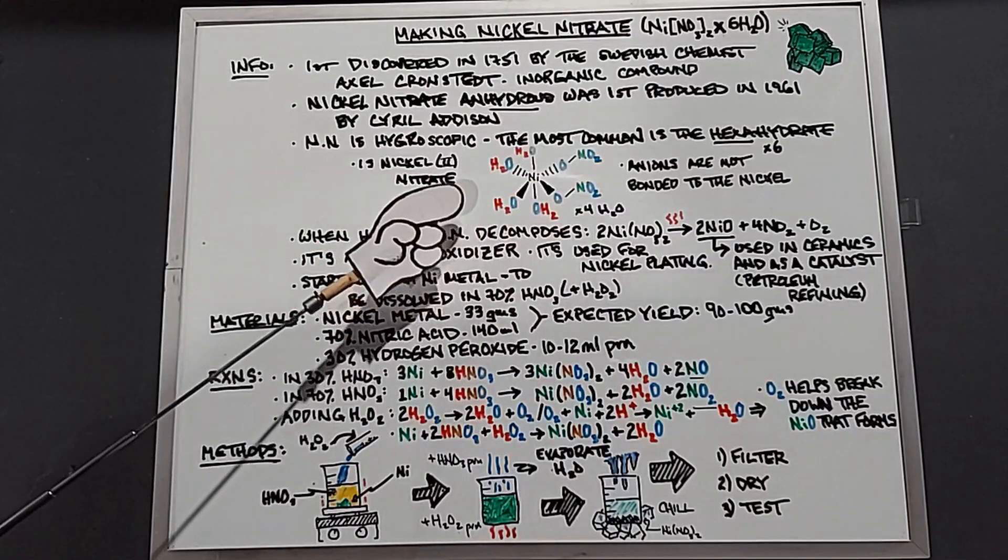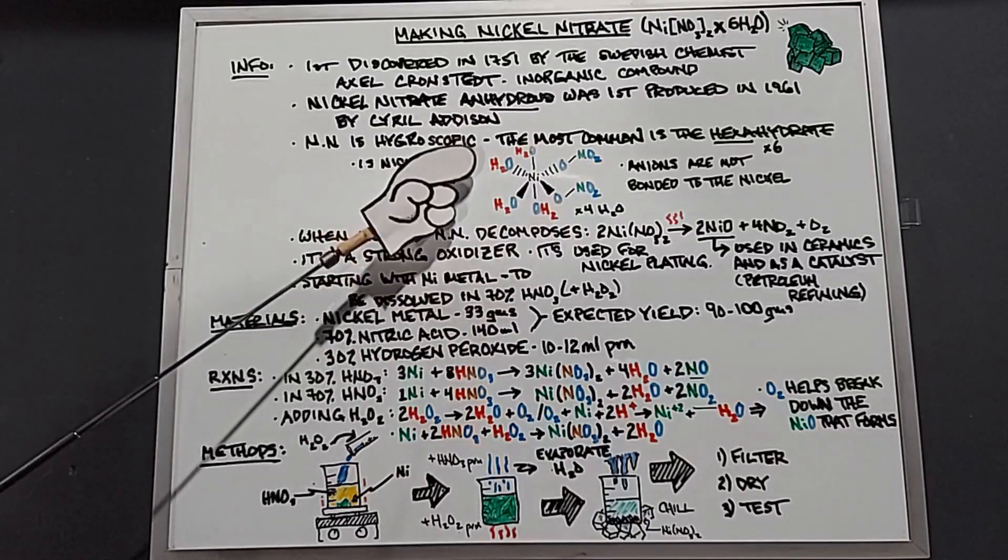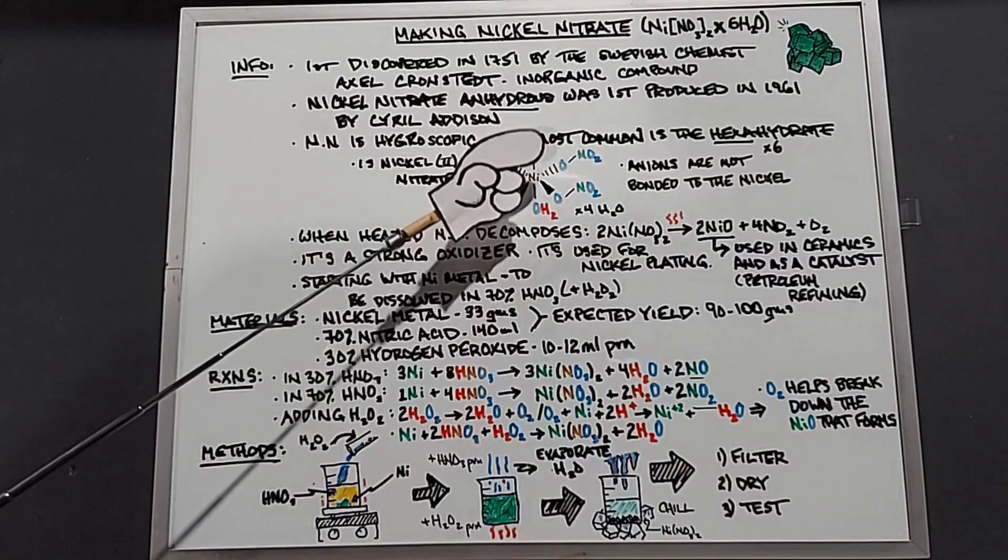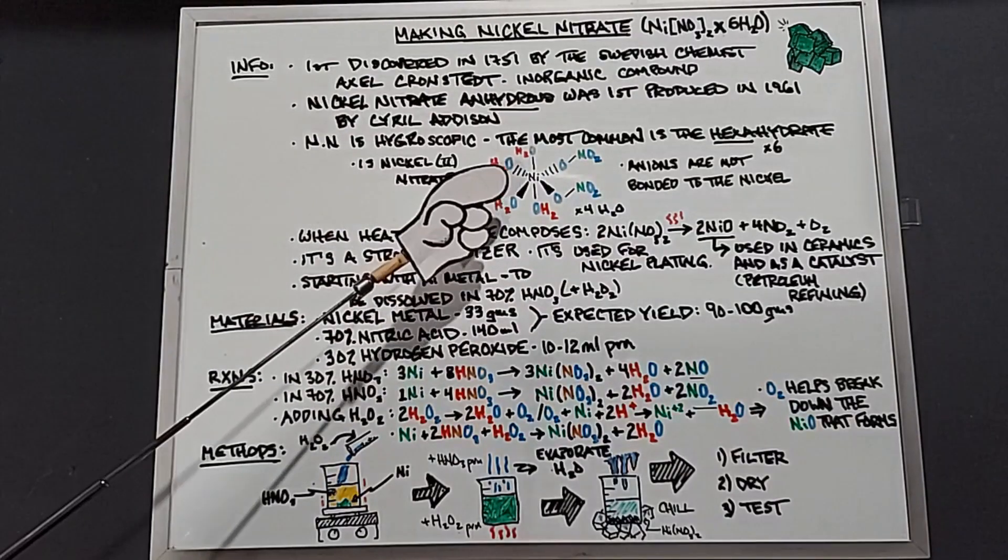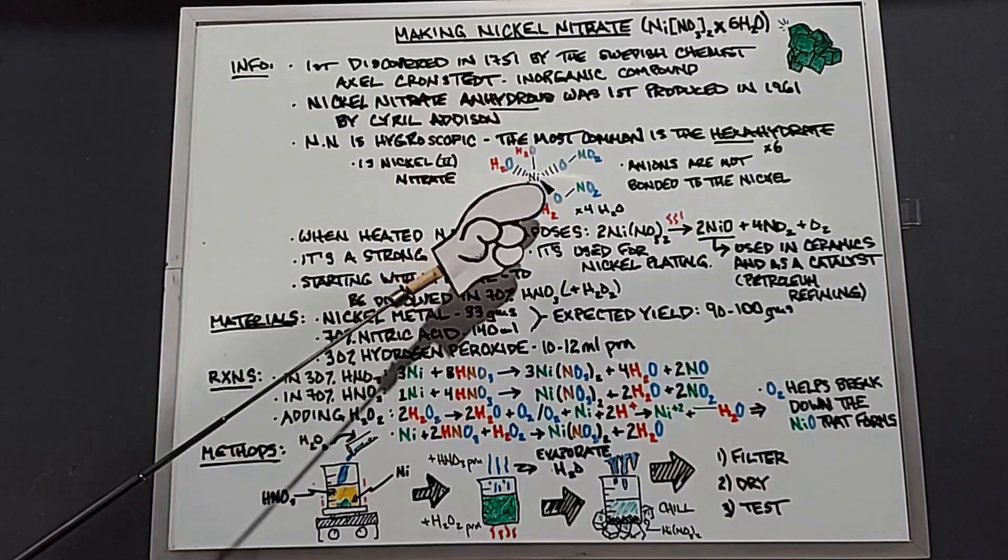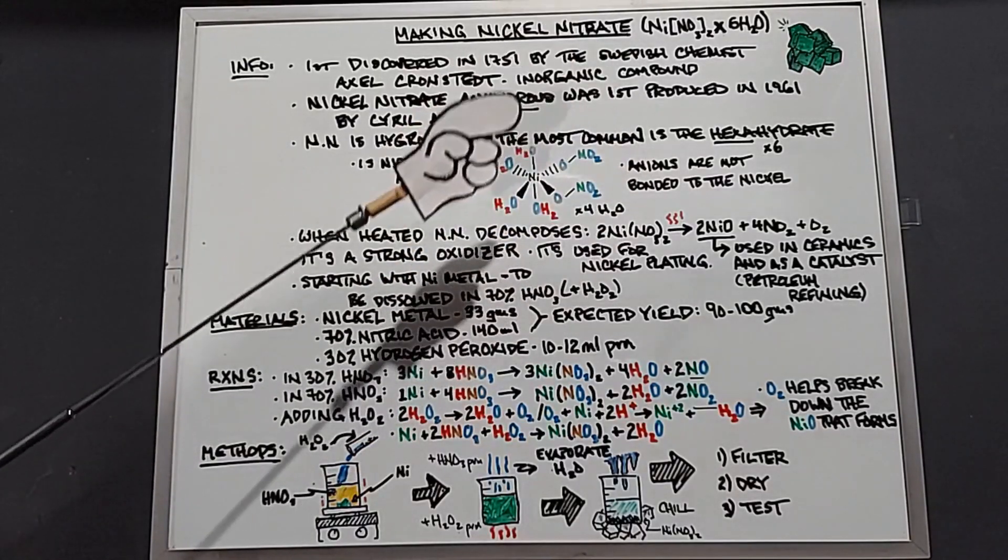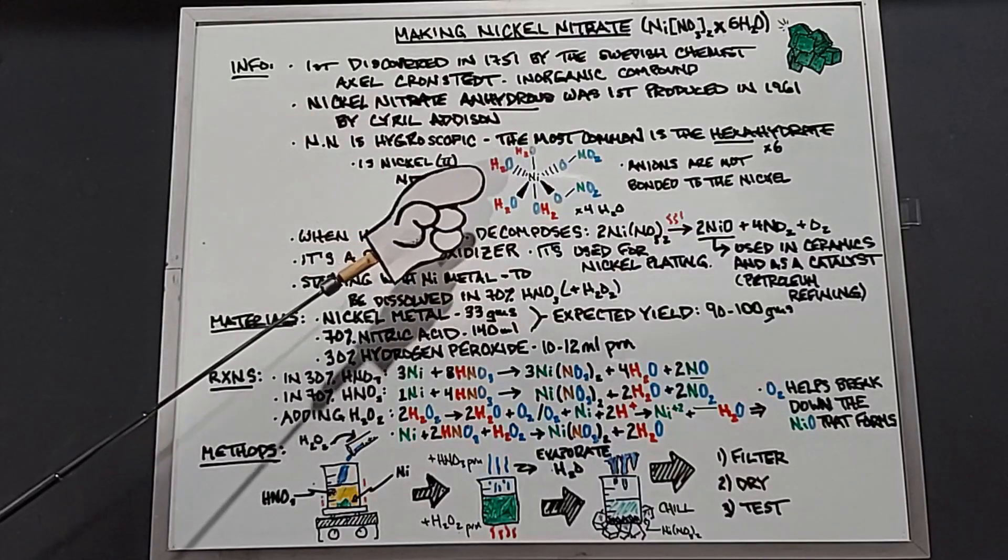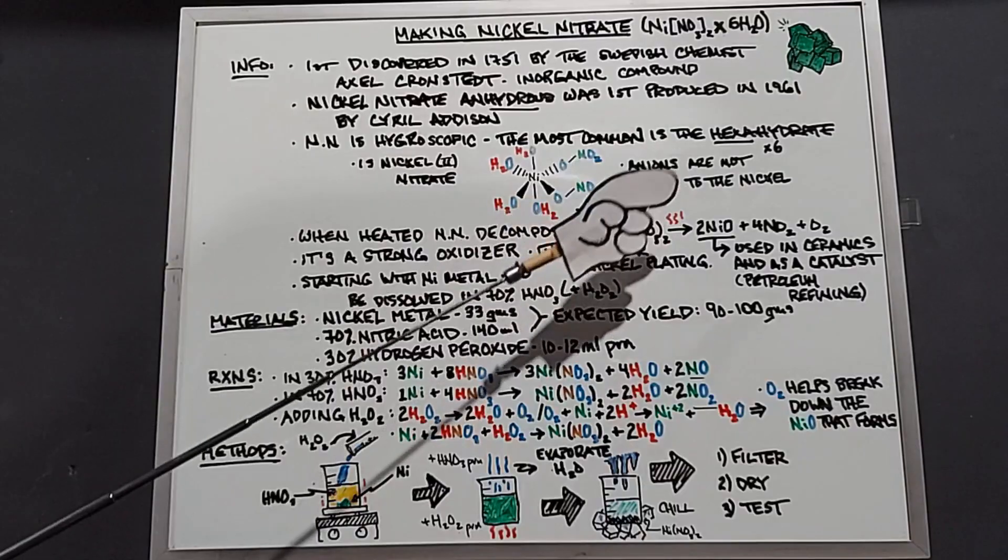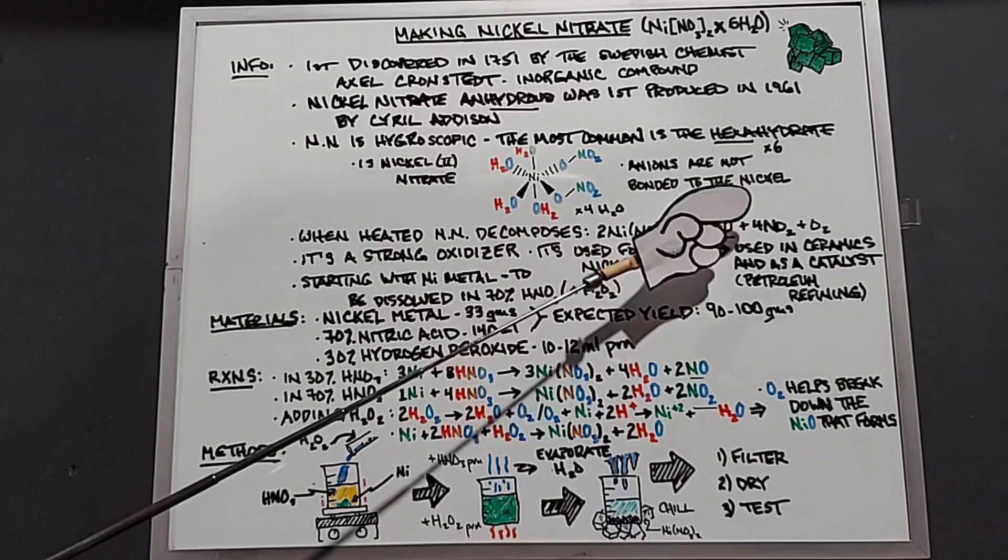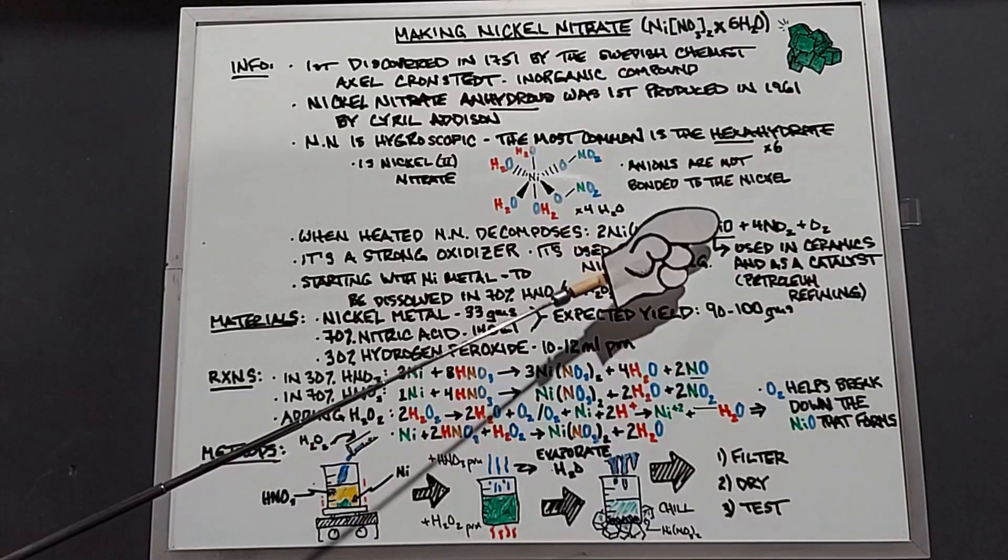Here's a very small and simple showing of how the H2Os are bonded to the nickel with the NO3s. In all the hydrates of nickel nitrate, the anions are not bonded to the nickel. When heated, nickel nitrate decomposes: two nickel nitrates plus heat will yield two nickel oxides plus four nitrogen dioxides plus O2.